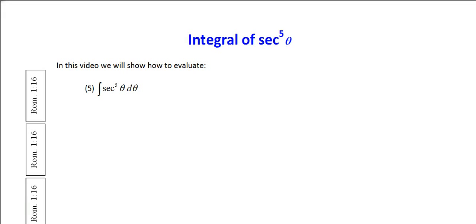We are now in the fifth of this series of videos on trying to evaluate the integrals of various powers of secant. This will be trying to find the integral of secant to the fifth power theta d theta. A way to solve this problem is to write this integral as the product of secant cubed theta times secant squared theta d theta.